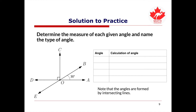Here is the solution to the practice problem. Angle AOC equals angle AOD minus angle COD. Since angle AOD equals 180 degrees and angle COD equals 90 degrees, angle AOC equals 180 minus 90, which is 90 degrees. Therefore, angle AOC is a right angle. To find angle BOC, subtract angle AOB from angle AOC. Since angle AOC is 90 degrees and angle AOB is 30 degrees, angle BOC equals 60 degrees.